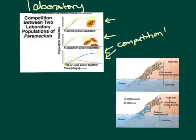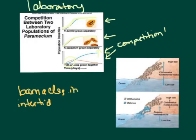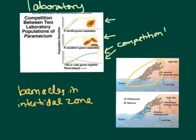Here we have a real-life example looking at barnacles in the intertidal zone — the area between the high tide mark and the low tide mark. Researchers removed all types of barnacles except one species, and that species alone could live within the whole intertidal zone. When a second species was introduced, the first species now only lives in the upper part of the intertidal zone, while the second species lives in the lower part. Again, competitive exclusion — separating their niches so there isn't competition.